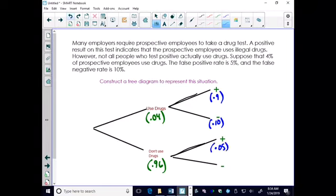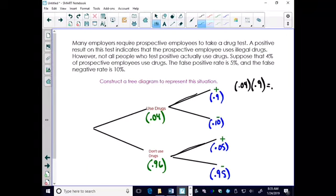Now of those that don't use drugs, still 5% show test positive for drugs. That's a false positive, which means 95% that are not using drugs do get a negative test result, that would be a true test result.